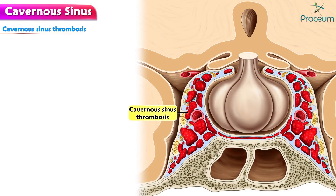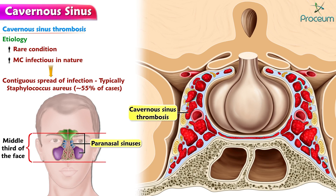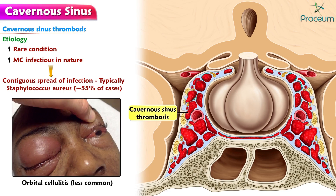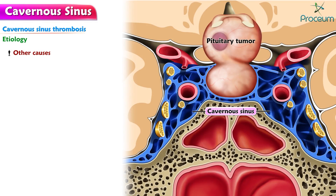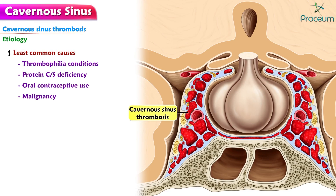Next, we're going to talk about cavernous sinus thrombosis, starting with the etiology. Cavernous sinus thrombosis, or CST, is a rare condition but is most commonly infectious in nature. It is mainly caused by the contiguous spread of infection, typically Staphylococcus aureus, with about 55% of cases from the paranasal sinuses, middle third of the face, dental abscesses, or orbital cellulitis, though this last one is less common. Other causes include cavernous sinus compression, for example trauma or tumors. The least common causes are thrombophilia conditions such as protein C/S deficiency, oral contraceptive use, malignancy, and pregnancy. It is idiopathic in 25% of cases.